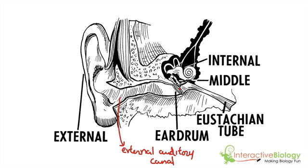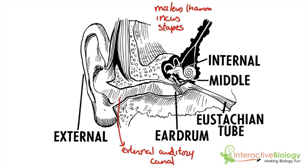Then there's a structure we call the eardrum. Connected to the eardrum, we have three small bones — we call them the three bony ossicles: the malleus, the incus, and the stapes. Depending on which book you read, you'll see malleus, incus, and stapes, or hammer, anvil, and stirrup. They all mean the same thing — this is the hammer, this is the anvil, and this is the stirrup.